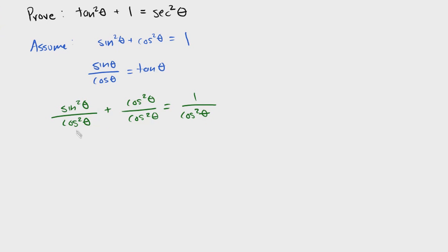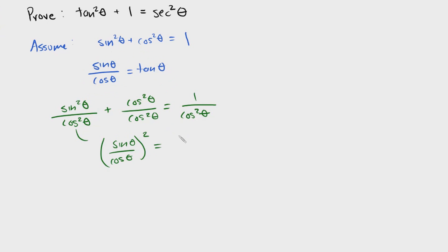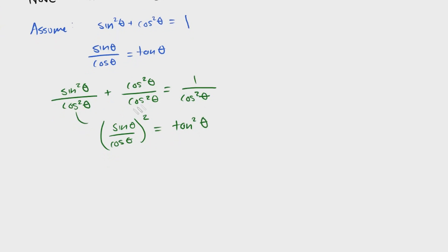This right here is actually just sine theta over cosine theta, quantity squared. As we defined earlier, we can say that this is just tangent theta, and then squared due to this right here. So once we have that, we can rewrite this equation.